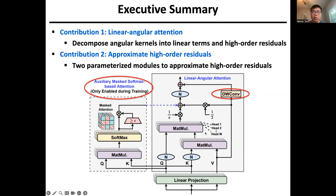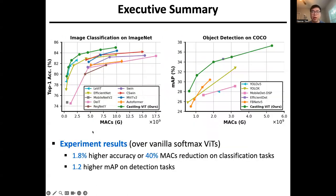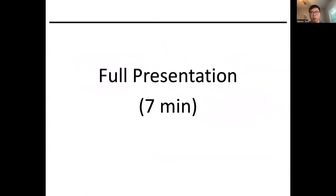Our second contribution is to approximate high-order residues with two parameterized DNN modules: depthwise convolution in the V branch, and the auxiliary masked softmax-based attention, which is only enabled during training and will be dropped for inference. Experimental results show that our Castling ViT consistently achieved better accuracy-efficiency trade-offs over vanilla softmax-based ViTs. This is a quick summary of this paper, and I will dive into the full presentation.